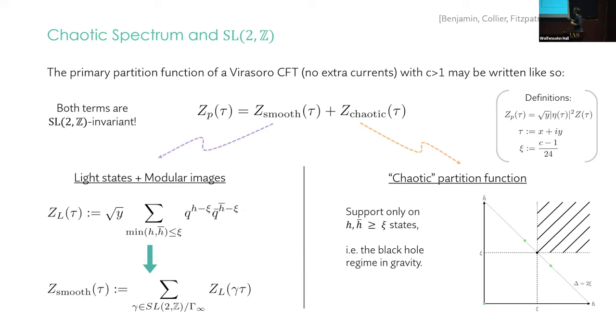So what is the smooth piece? The smooth piece is the sum of all light states in the theory and their modular images under SL(2,Z). So sum up all the states where I'm defining light to mean that the twist is bounded above by C minus 1 over 12. And for each such state, add all of the modular images under SL(2,Z). We can complete this minimally by just adding all the images and nothing more. This defines a Poincaré sum of this thing Z_light and that whole thing is what I'm calling Z_smooth. This by construction is modular invariant.